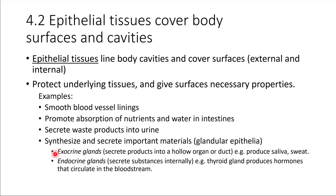With an exocrine gland, it secretes something to the surface of the body — either an external surface or an internal surface. For example, sweat glands are exocrine glands; they secrete substances through a duct out to the surface of the skin. We also have exocrine glands in our intestinal tracts that produce digestive enzymes and secrete them into the hollow cavity inside the intestines. Endocrine glands, on the other hand, produce substances and secrete them internally, so the bloodstream picks them up and circulates them through the body. This is how many of our hormones are produced and taken up — through endocrine glands.